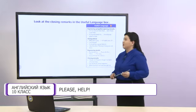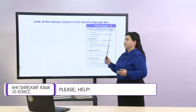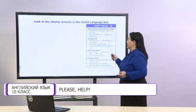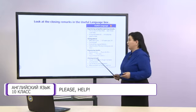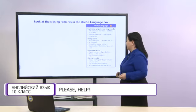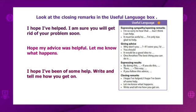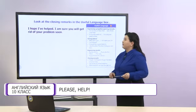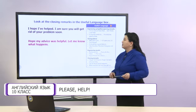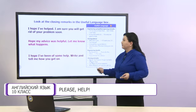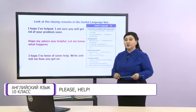Now our task is to look at the closing remarks in the useful language box. Please read the closing remarks: 'I hope I've helped.' 'I hope I've been of some help.' 'Let me know what happens.' 'Write and tell me how you get on.' These phrases will help us finish our letter. For example: 'I hope I've been of some help. Write and tell me how you get on.' You can use these phrases in your emails.